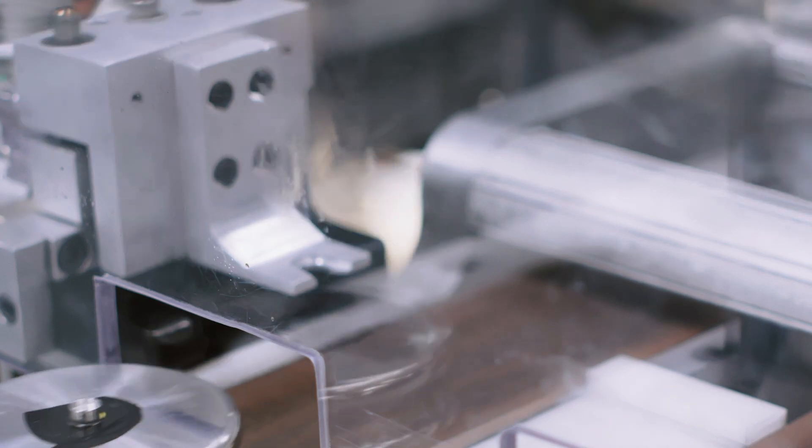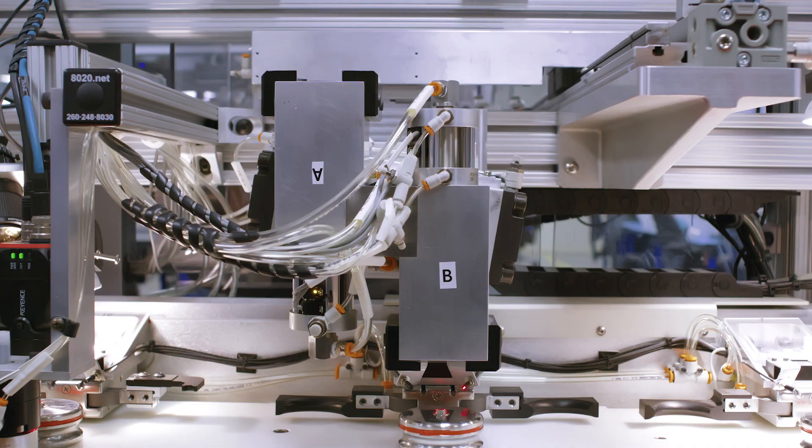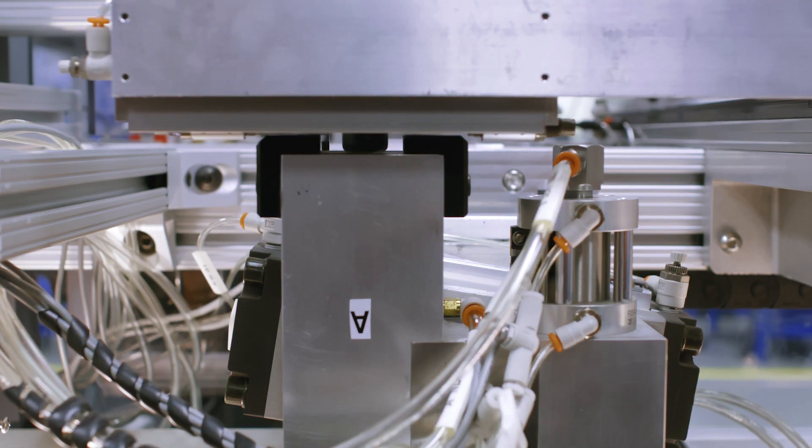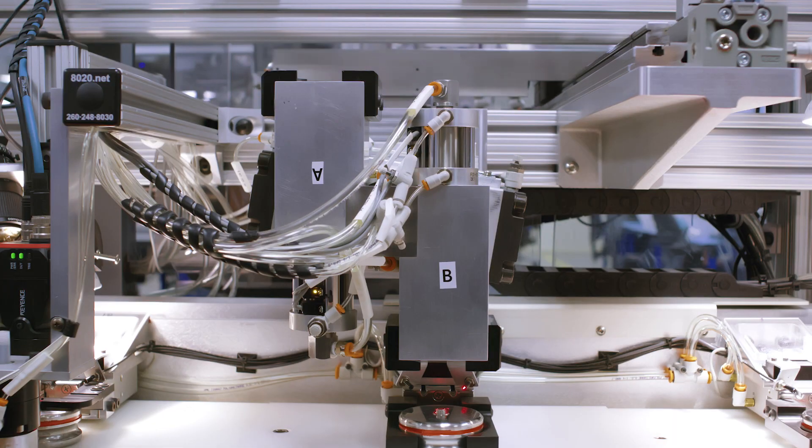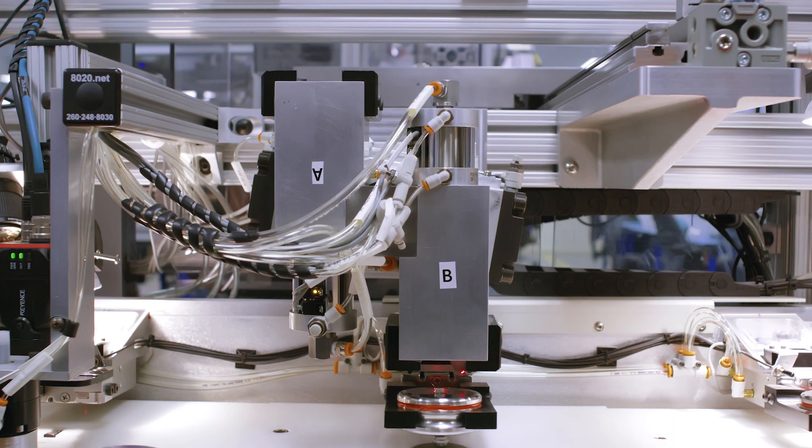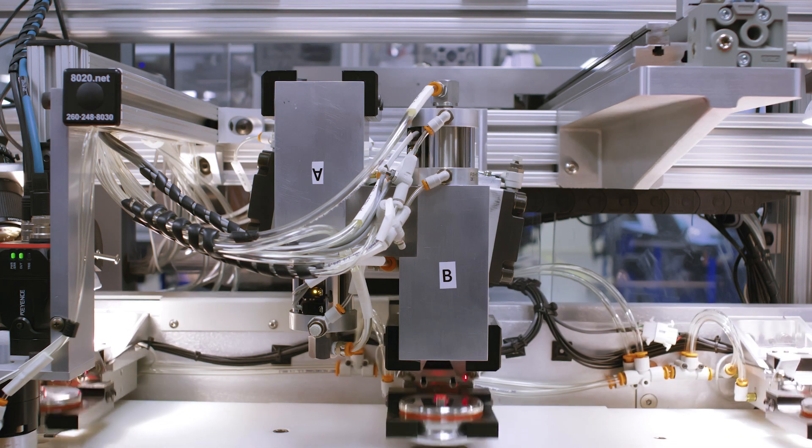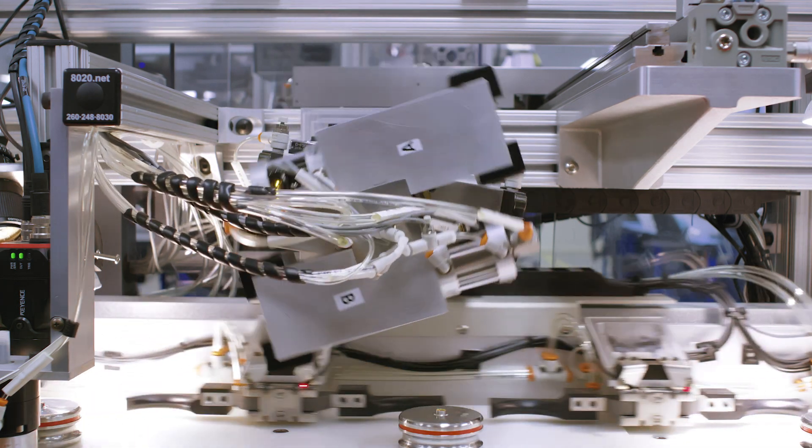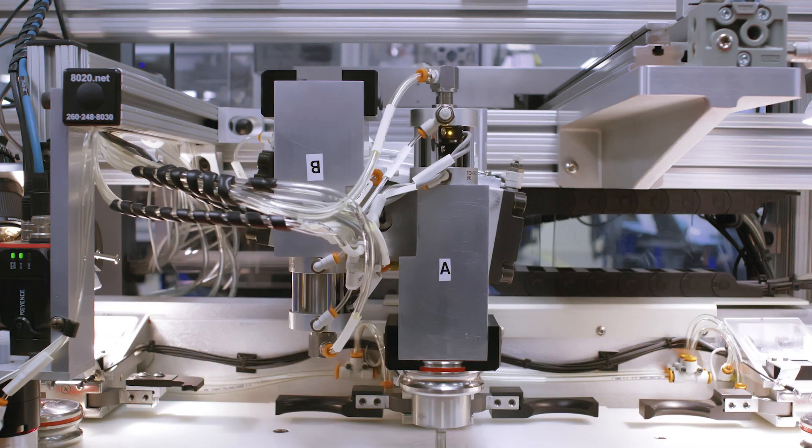The anode sub-assembly gets picked up off the puck and is brought forward to mate with the cathode side of the cell. At this time the negative electrode meets the positive electrode. The anode sub-assembly is inserted inside the cathode sub-assembly by a vacuum seat station to a desired depth.